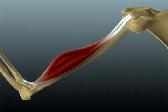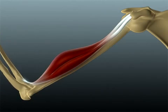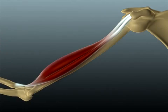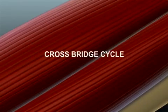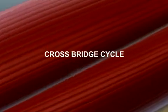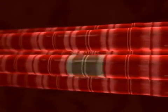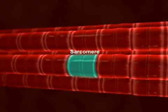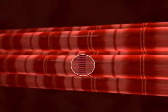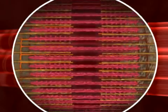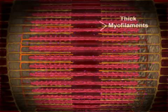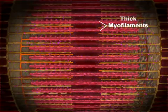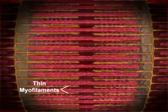The contraction of a skeletal muscle generates the force necessary to move the skeleton. A contraction is triggered by a series of molecular events known as the crossbridge cycle. In a skeletal muscle fiber, the functional unit of contraction is called the sarcomere. A sarcomere shortens when myosin heads in thick myofilaments form crossbridges with actin molecules in thin myofilaments.